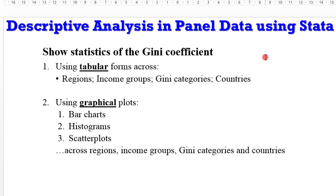So try to build your panel data to include different categories. In other tutorials, I will cover the graphical plots using bar charts, histograms, and scatter plots also across the regions, income groups, and the journey categories. All these are also part of the descriptive statistics that you can include in your research.